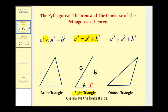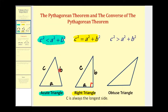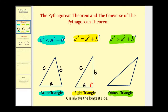If c squared is less than a squared plus b squared, then we have an acute triangle. To apply this, c must always be the longest side. The last case is if c squared is greater than a squared plus b squared, then we have an obtuse triangle, meaning one of the angles would be between 90 and 180 degrees.